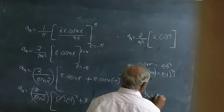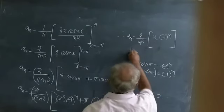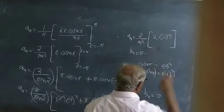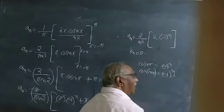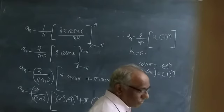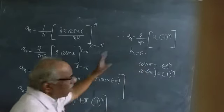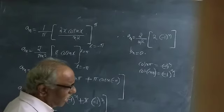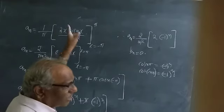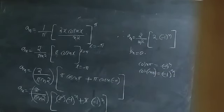Similarly, if you calculate the value of bₙ, that becomes 0. Later I will tell you how to determine bₙ = 0 without calculation. So now that we have the values of aₙ and bₙ, we substitute into the Fourier series: f(x) = a₀/2 + Σ aₙ·cos(nπx/l) + Σ bₙ·sin(nπx/l). Okay, let us stop at this point.